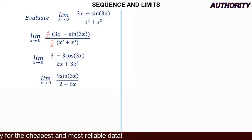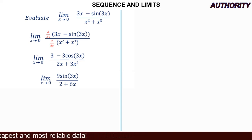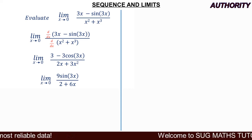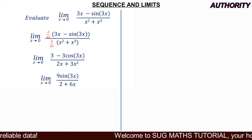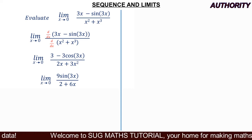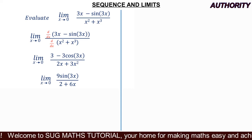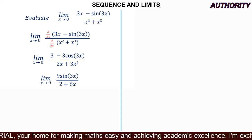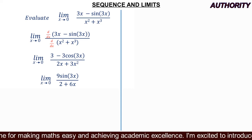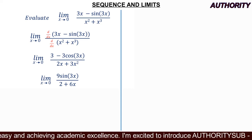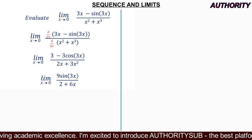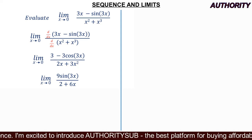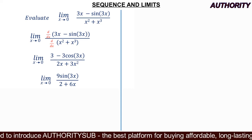Differentiating for the second time: the constant 3 disappears, and the derivative of minus 3 cos 3x gives 9 sin 3x. In the denominator, the derivative of 2x is 2 and the derivative of 3x squared is 6x. So we now have 9 sin 3x all over 2 plus 6x.